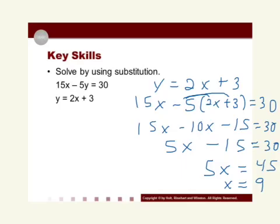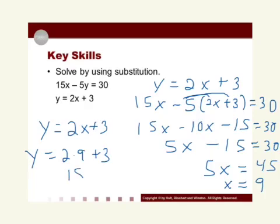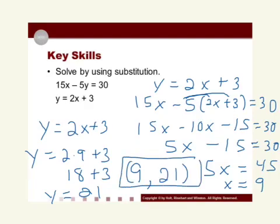Now I have half of my solution. To find the other half, I plug x equals 9 back into the equation used in step one: y equals 2x plus 3. Substituting: y equals 2 times 9 plus 3, which is 18 plus 3, so y equals 21. Now that I know x equals 9 and y equals 21, I have my ordered pair solution to the system.